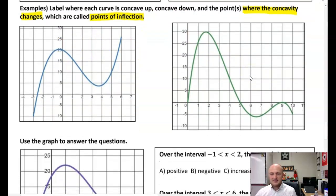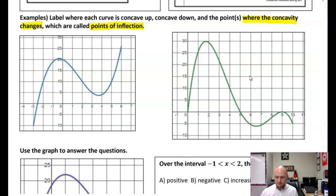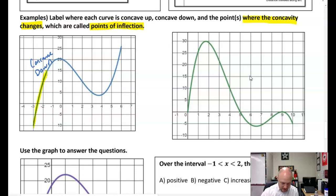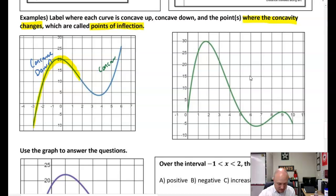So our first example: this section here is concave down, where it is opening downward. And then this section is concave up, because the graph is opening upwards.